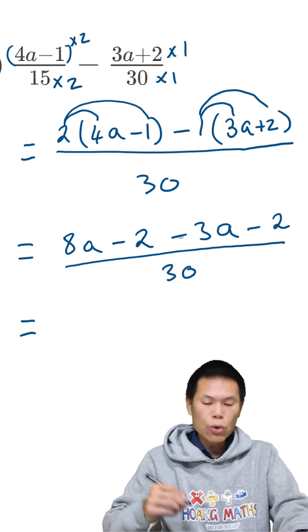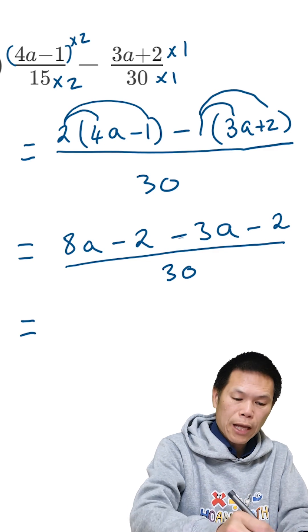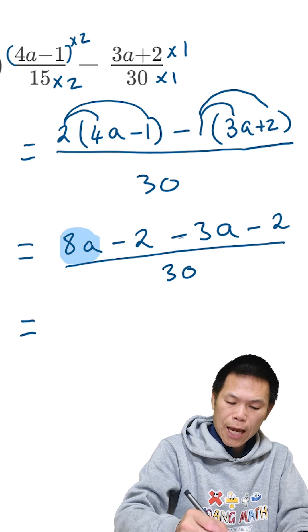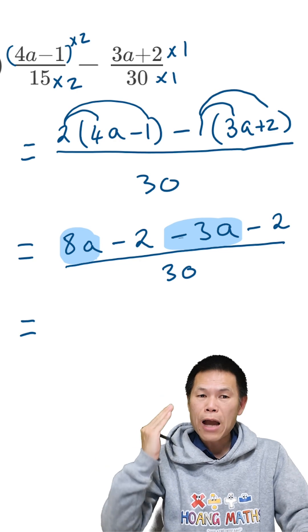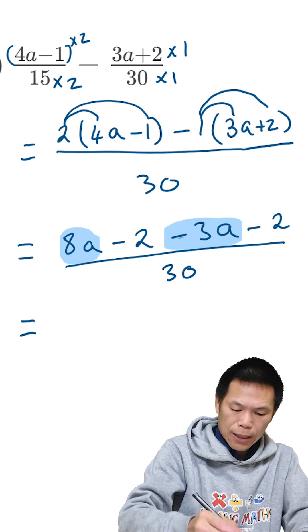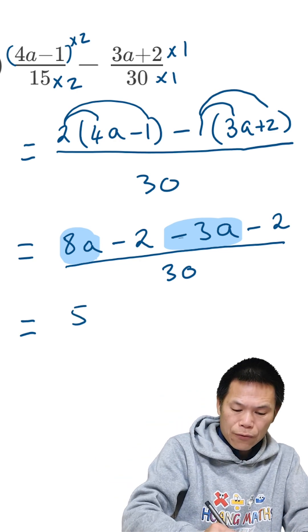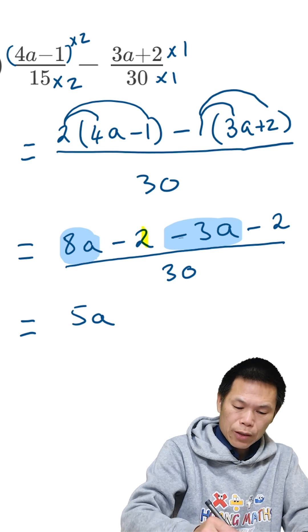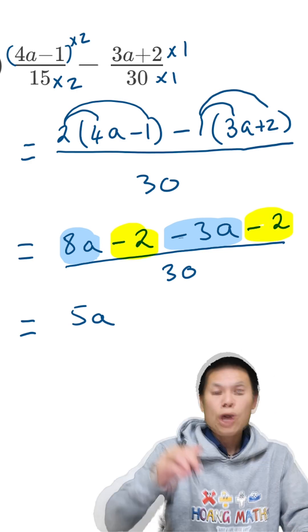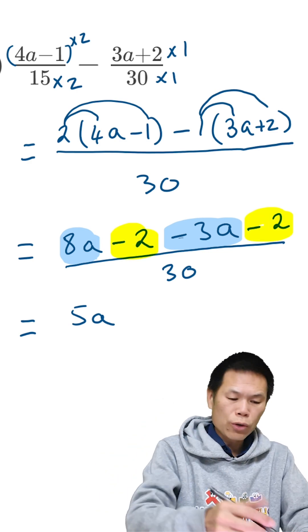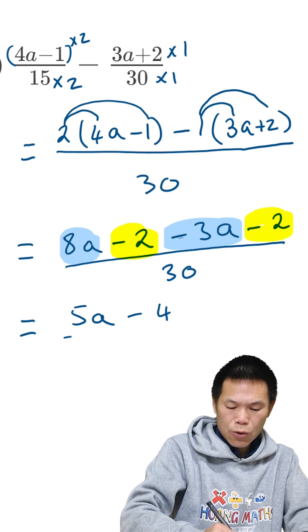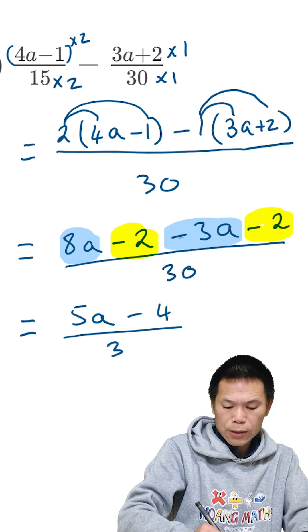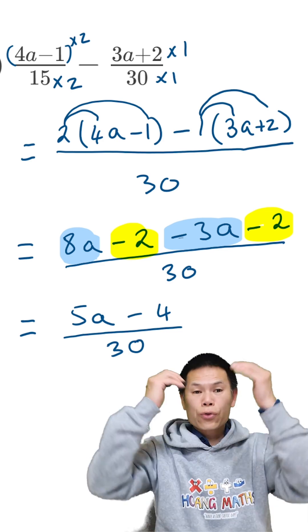That is equal to... we're collecting the like terms now. So we have 8a minus 3a. 8 minus 3 is 5, so that means 5a. And then we have negative 2 minus 2. So negative 2 minus 2 gives me negative 4. So that is minus 4, all over 30.